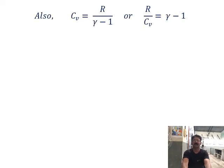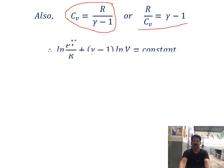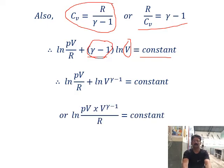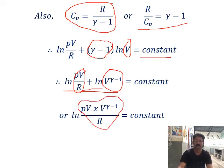Using CV equals R by gamma minus one, or R by CV equals gamma minus one, the expression becomes ln(PV by R) plus (gamma minus one) times ln V equals constant. The term (gamma minus one) times ln V can be written as ln V to the power (gamma minus one). So we get ln(PV by R) plus ln V to the power (gamma minus one) equals constant. Using the property ln A plus ln B equals ln(A times B), this becomes ln of PV by R times V to the power (gamma minus one) equals constant.